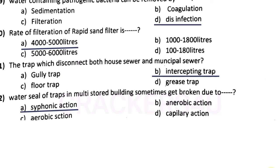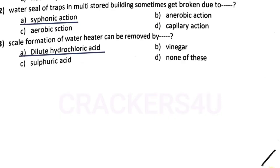Question number twenty-one: water seal of traps in multi-storied building sometimes gets broken due to — answer option A, siphonic action.